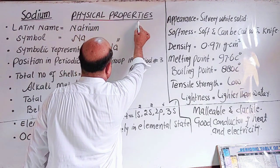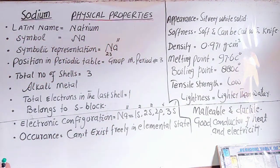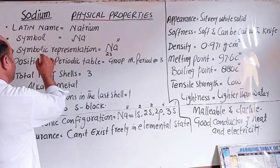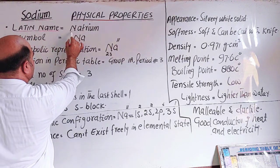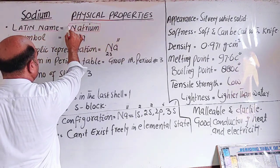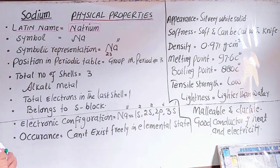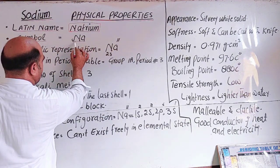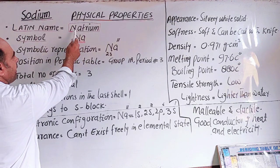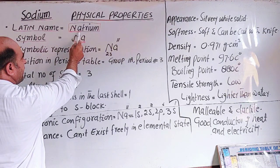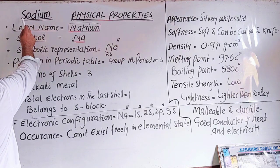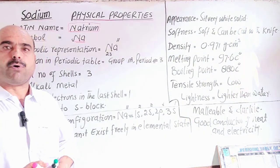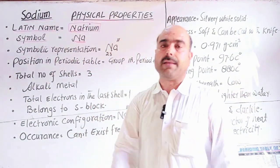Sodium is an element. Its Latin name is Natrium. The English name is sodium. Its symbol is Na. This symbol Na comes from Natrium. We use symbolic representation to represent this element or atom.